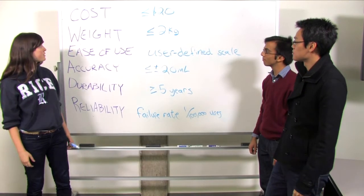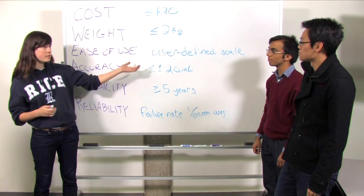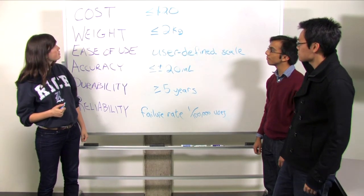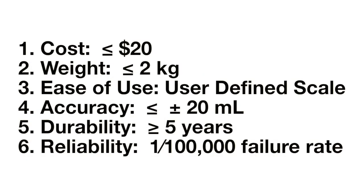So what we've done is we've taken our objectives and we've turned them into measurable design criteria that we can use when making decisions about how we're going to engineer this device. So we said we want our cost to be less than $20 and the weight of each device to be less than 2 kilograms. And when we came to ease of use, we thought it would be more suitable to have a user-defined scale. And when we came to accuracy, we wanted something that was under plus or minus 20 mils instead of an actual percent of IV fluid dispensed. As for durability, we decided on something that lasts more than five years. And for reliability, we quantified that as a failure rate of less than one failure per 100,000 uses. Thank you.